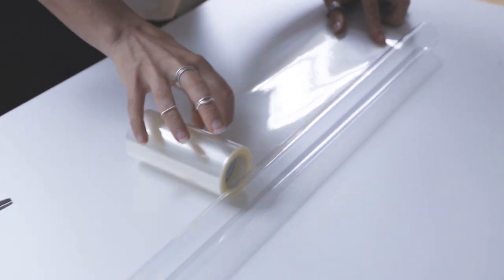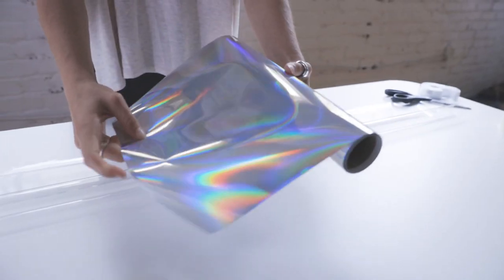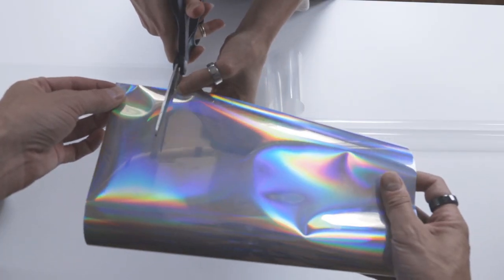First, cut a piece of cake color about the same length as your tube. Then cut a slice of vinyl that is about half the width of the cake color.